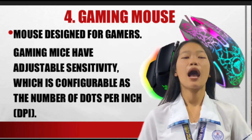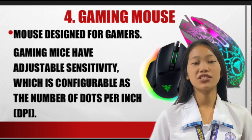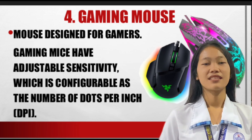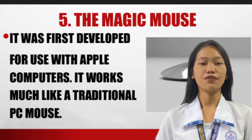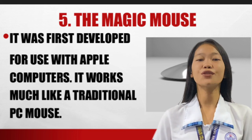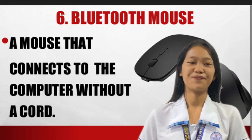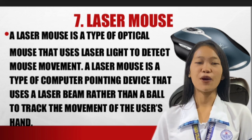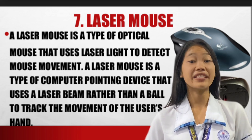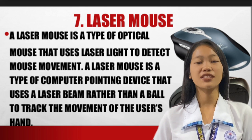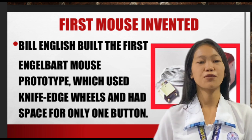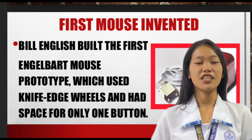The fourth one is the gaming mouse — a mouse designed for gamers. Gaming mice have adjustable sensitivity, configurable as the number of dots per inch, or DPI. The fifth one is the magic mouse, first developed for use with Apple computers, and it works much like a traditional PC mouse. The sixth one is the Bluetooth mouse, which connects to the computer without a cord. The seventh is the laser mouse, a type of optical mouse that uses laser light to detect movement rather than a ball. Bill English built the first Engelbart mouse prototype, which used knife-edge wheels and had space for only one button.